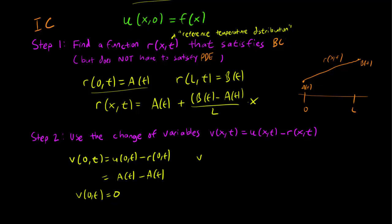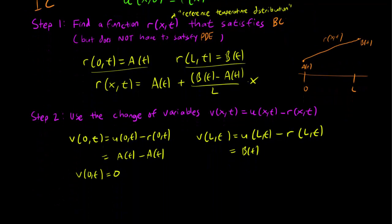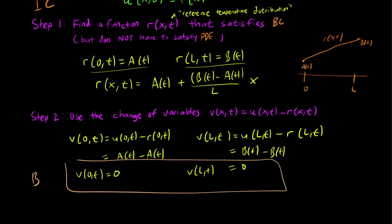And the same thing with the other boundary. v(L,t) is going to be equal to u(L,t) minus r(L,t), which is just going to be B(t), based on our boundary conditions. And for r as well, we get B(t). So B(t) minus B(t) is again 0. So we get these nice Dirichlet boundary conditions for v once more. And that is good. And that's exactly the reason why we needed these reference distributions to make the boundary conditions nice.